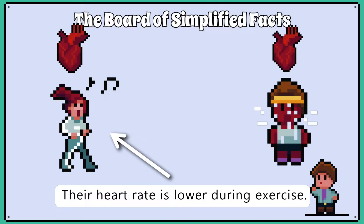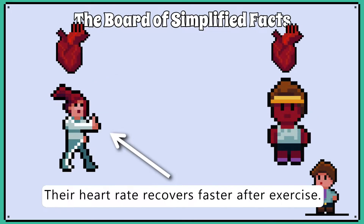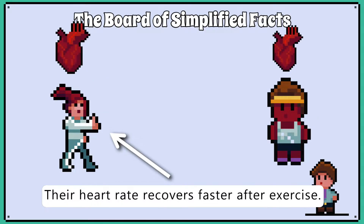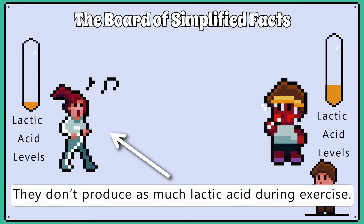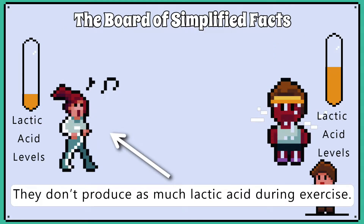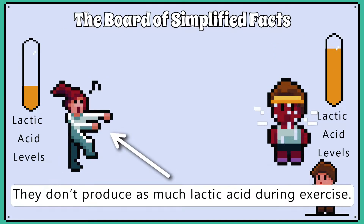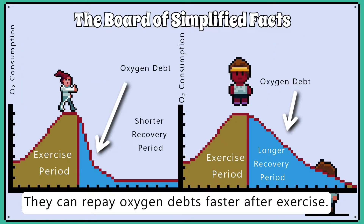Their heart rate is lower during exercise. Their heart rate recovers faster after exercise. They don't produce as much lactic acid during exercise. They can repay oxygen debts faster after exercise.